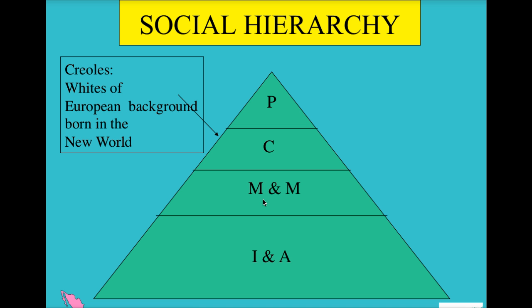Below the Peninsulares, you have the Creoles, who are in every sense European except that they were born in the New World. Just by virtue of where they were born, they have a lower social status. They occupy many higher positions and are large landowners, but they don't have a lot of say in government. Because they are European and their families want to give them the best advantages, many are sent to Europe to be educated, where they come into contact with Enlightenment ideas and bring those ideas back to Latin America. The Creoles' big frustration is that they are denied political power.